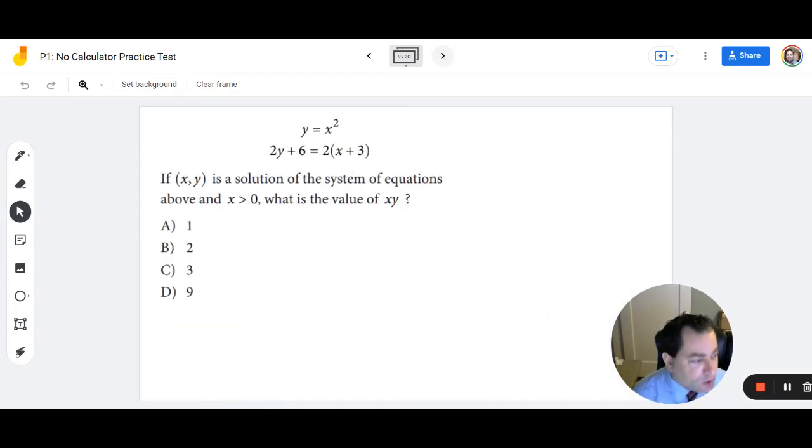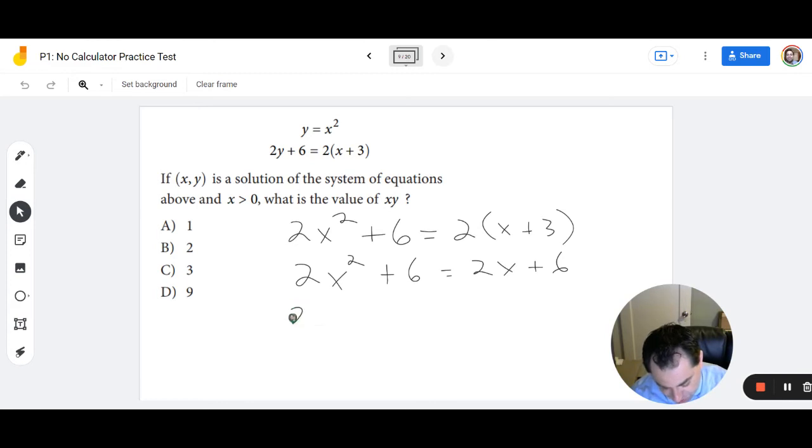Number 9. We have another system of equation here, and it's going to be substitution. So because y equals x squared. So if we take y and we substitute x squared, we get 2x squared plus 6 equals 2x plus 3. I'm going to distribute my 2. I get 2x squared plus 6 equals 2x plus 6. I can subtract 6 from both sides. So I get 2x squared equals 2x.